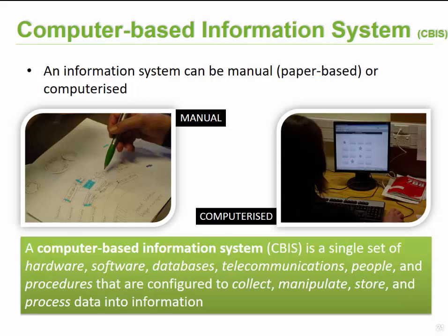On the other side we can have computerized systems, and that's where the importance of information handling nowadays comes into play. If you go to the bank, they will have a computerized information system. A computer-based information system is usually a set of hardware, software, databases, telecommunications, people and procedures configured to allow you to collect, manipulate, store and process data into information.